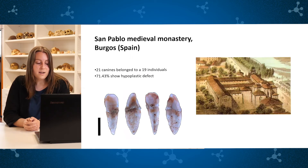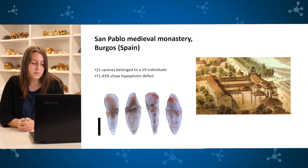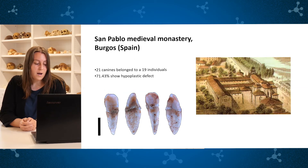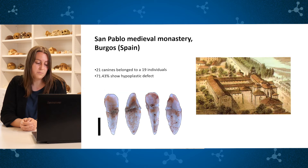21 permanent canines belonging to 19 medieval individuals from the San Pablo monastery have been analyzed. Among these 21 canines, 15 showed enamel defects — that is 71.43% of the total.